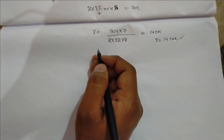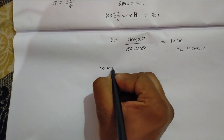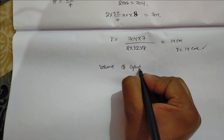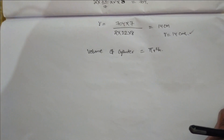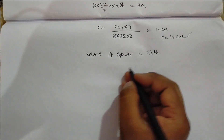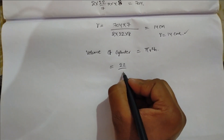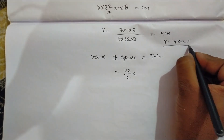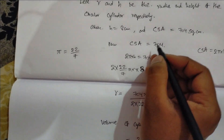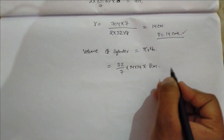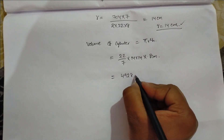Now let's find the volume value V. Volume of the cylinder is equal to πr²h. When we substitute the values: (22/7) × r squared, where r is 14 centimeters, so 14 × 14, and height value is 8 centimeters. When we calculate it we get the answer approximately 4928 cubic centimeters.